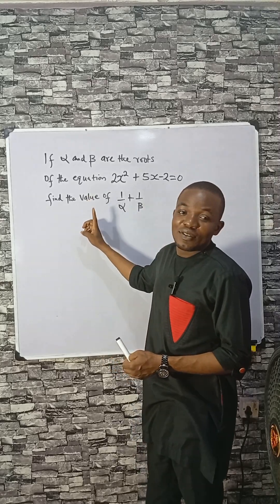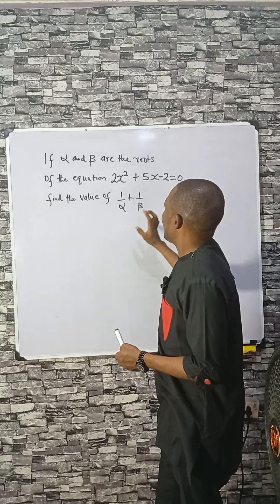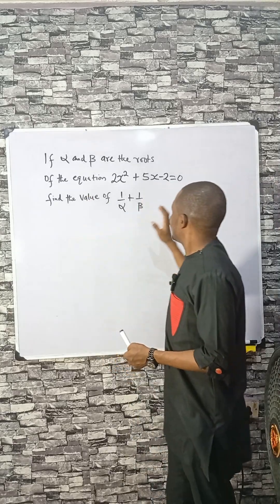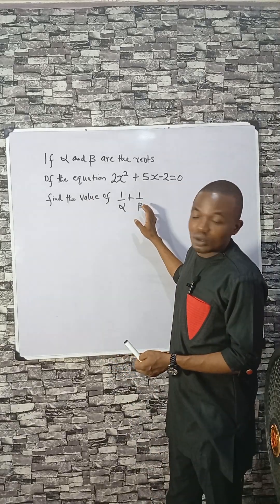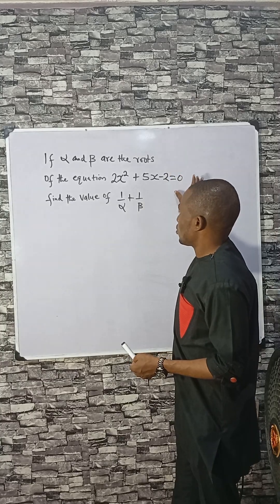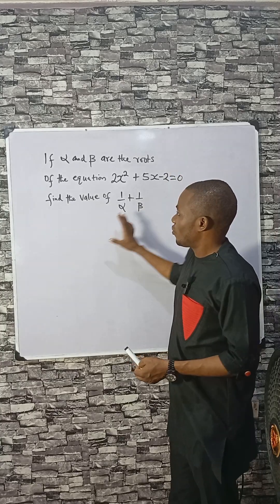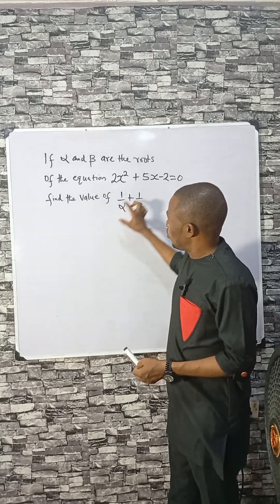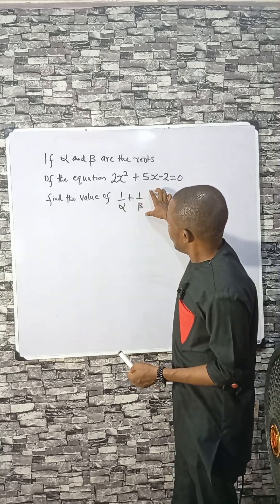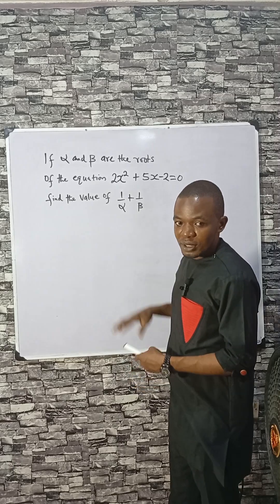If alpha and beta are the roots of the equation 2x squared plus 5x minus 2 equal to 0, find the value of 1 over alpha plus 1 over beta.